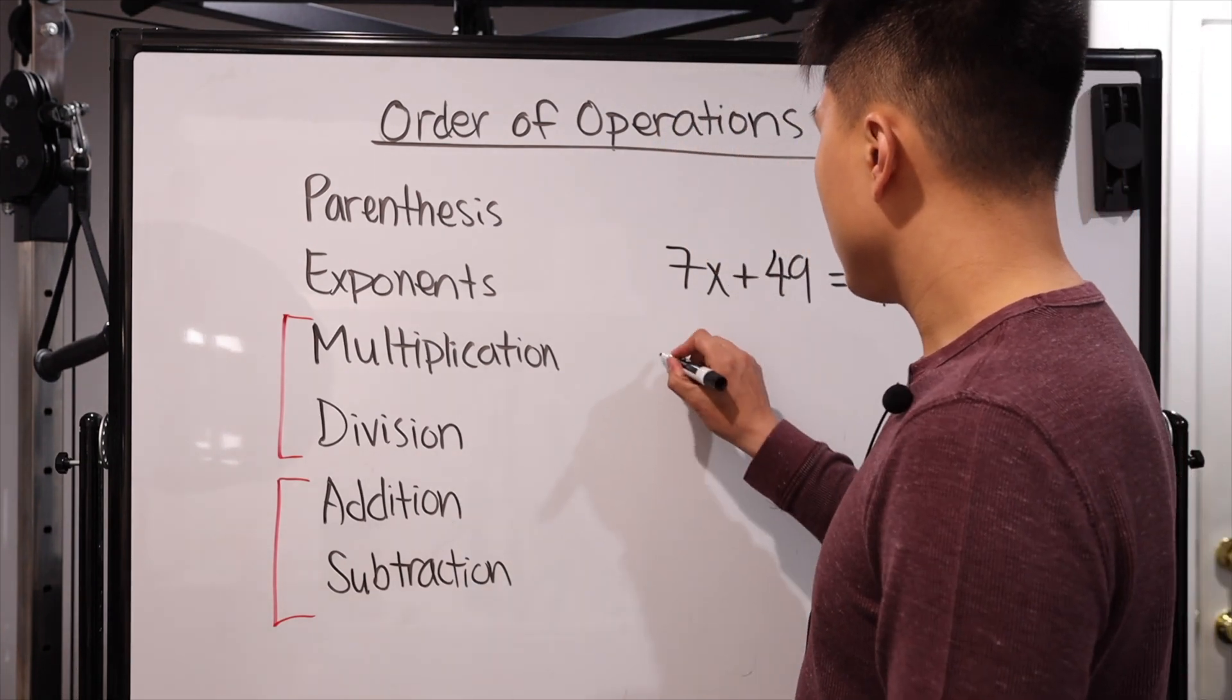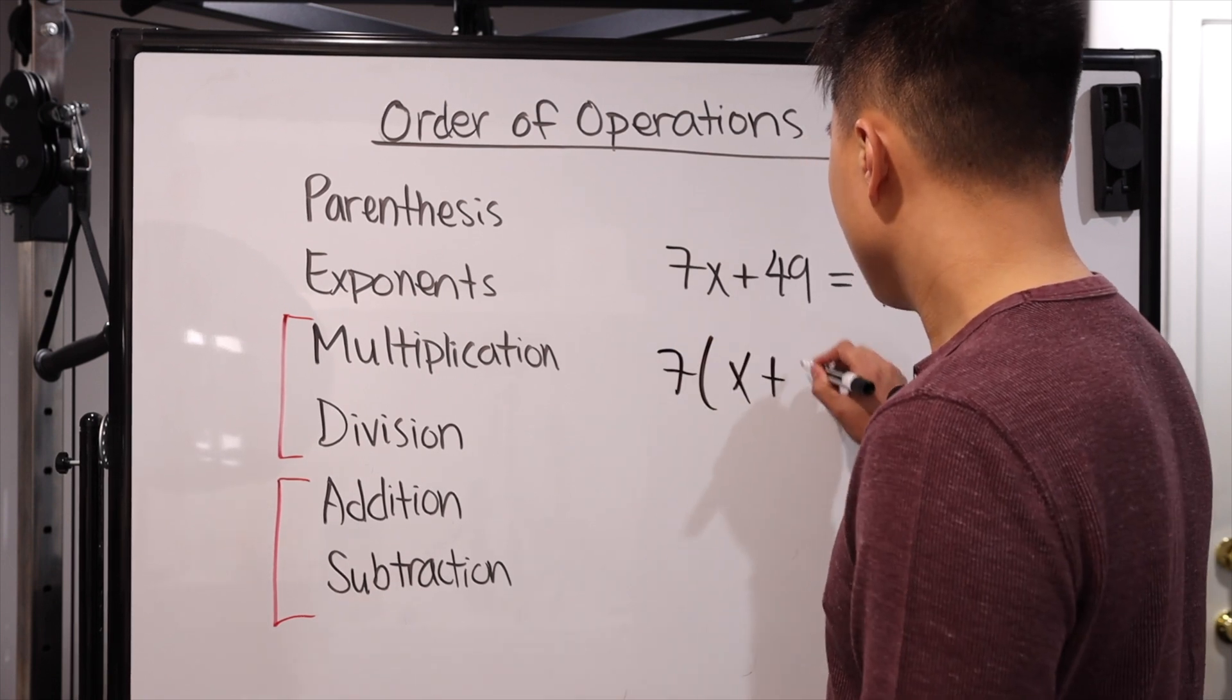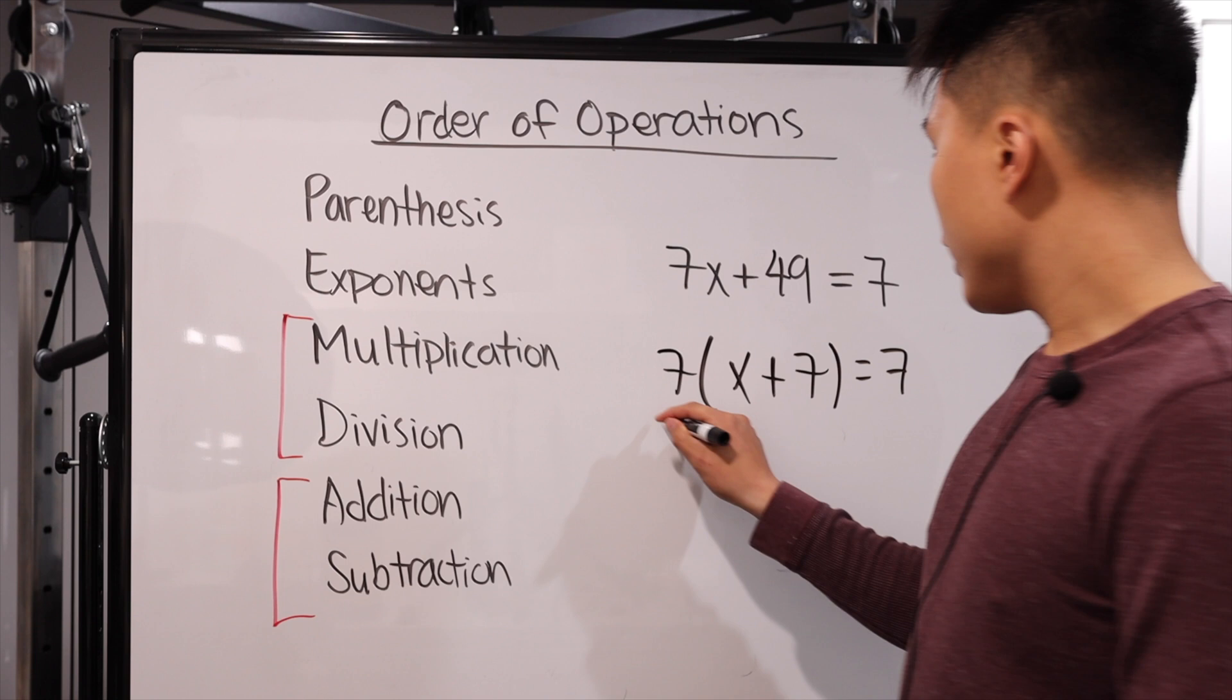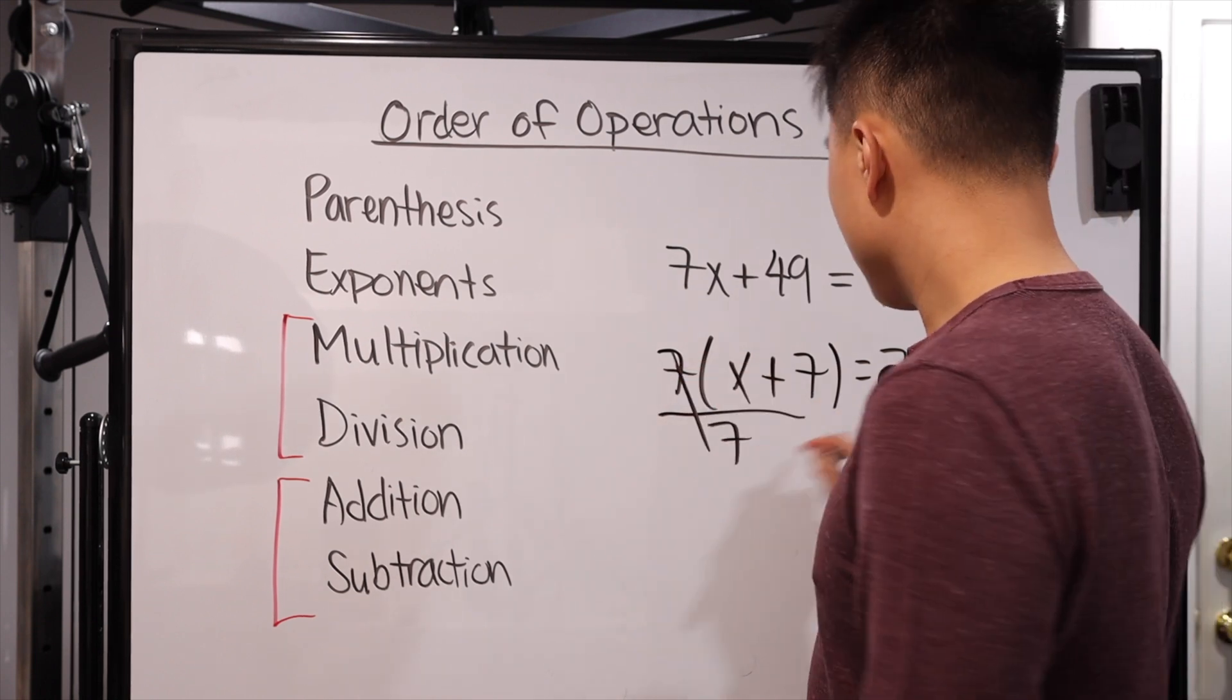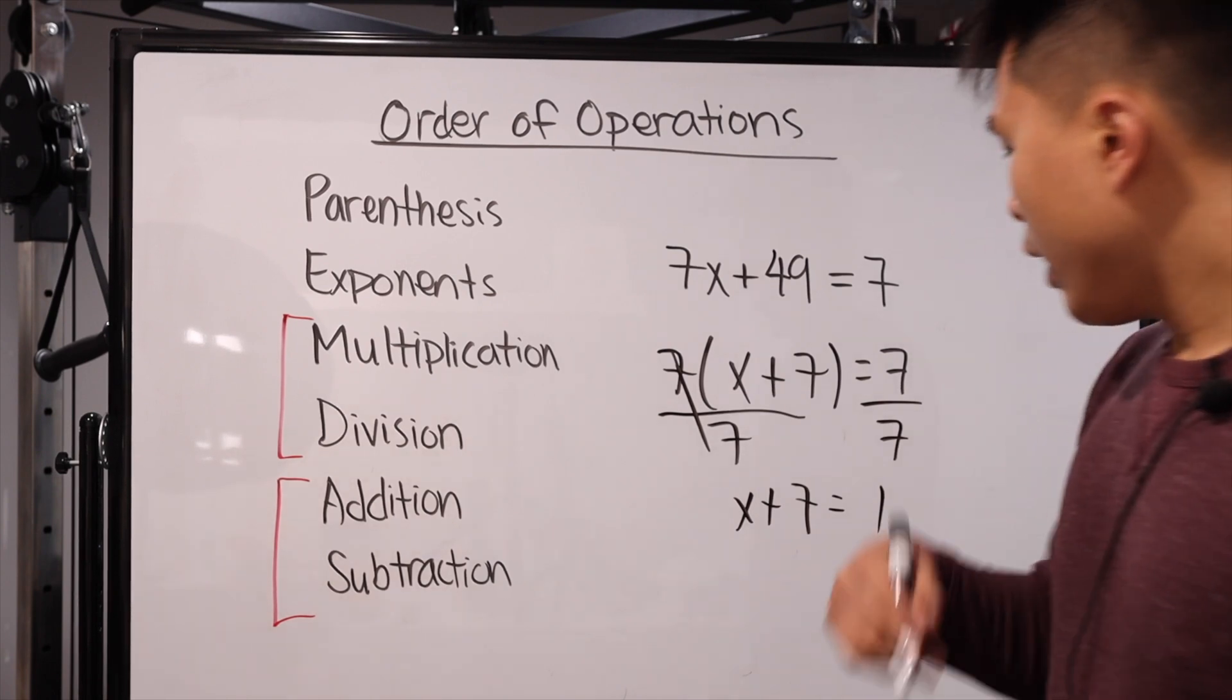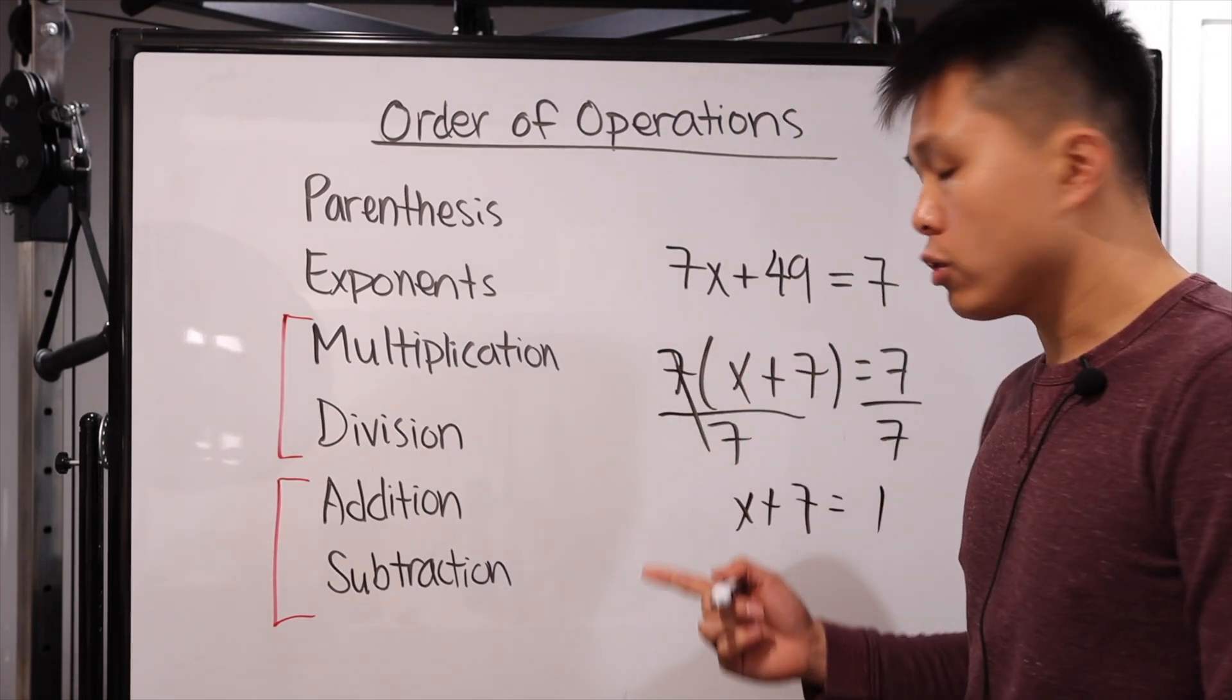So for example, here, I'm going to take out the 7. I'm factoring out 7. All of a sudden, it's going to be X plus 7 equals 7. And then we're going to divide by 7 on both sides. And all of a sudden, you have X plus 7 equals 1. And all of a sudden, it's a lot easier to solve than going through the other steps.